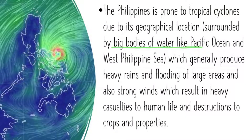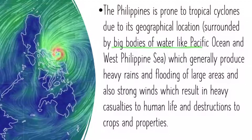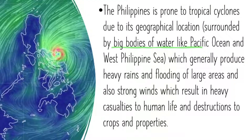The Philippines is prone to tropical cyclones due to its geographical location, being surrounded by large bodies of water like the Pacific Ocean and the West Philippine Sea. These generally produce heavy rains and flooding of large areas, as well as strong winds which result in heavy casualties to human life and destruction to crops and properties. In short, the Philippines is more prone to tropical cyclones because it is near large bodies of water like the Pacific Ocean.